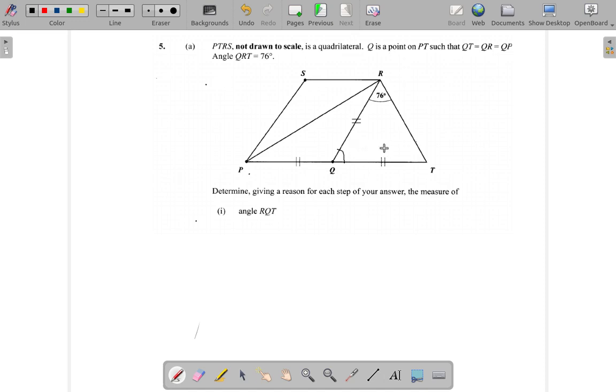Now let's see something here. Remember, if RQ equals QT, then angle QRT must be the same as angle QTR. The triangle QRT is isosceles. So this must be 76, this is 76.